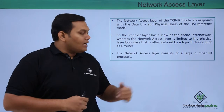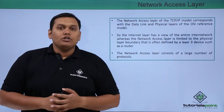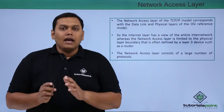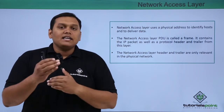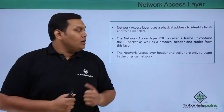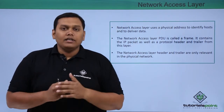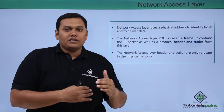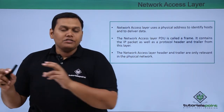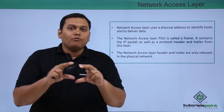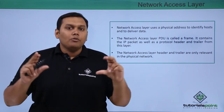The network access layer consists of a large number of protocols. It uses physical addresses to identify host details and to deliver the data. The physical address is mapped with the hardware address so that data delivered from one source to one destination is possible.